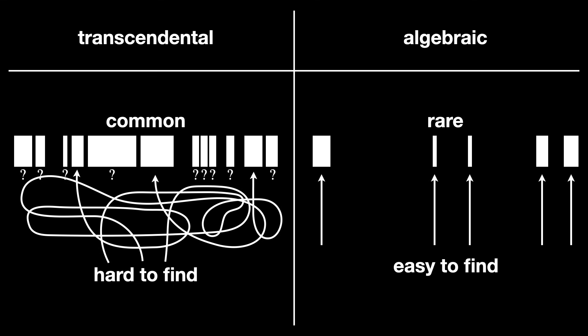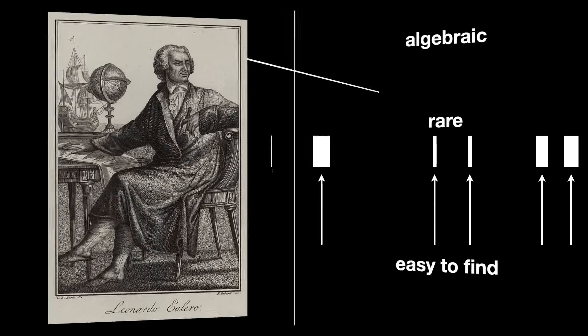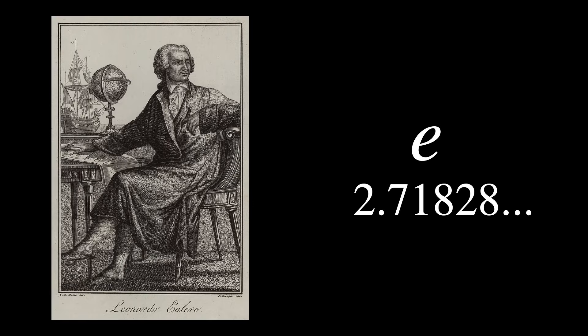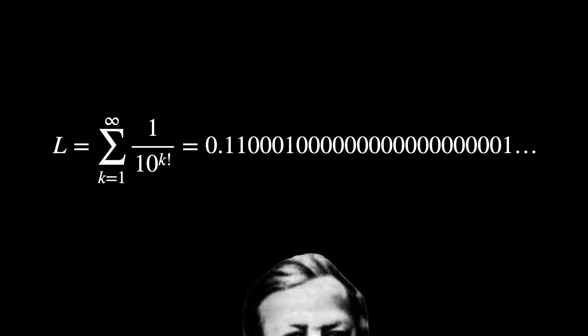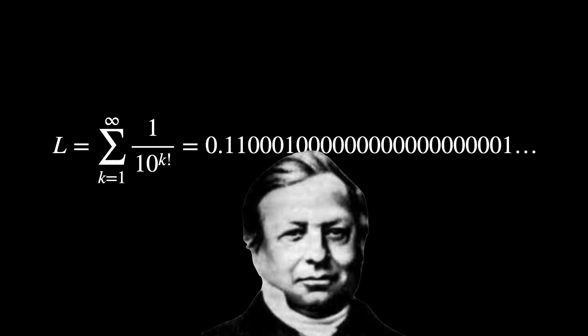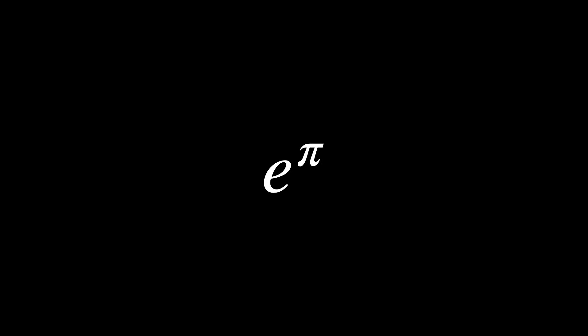Some examples of transcendental numbers are the following: Euler's number e, the number pi, Liouville's constant, 2 to the power of pi — which is known to be transcendental by the Gelfond-Schneider theorem — and e to the power of pi, which is called Gelfond's constant.